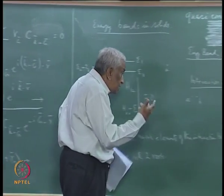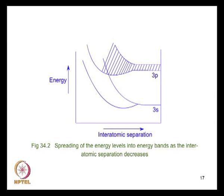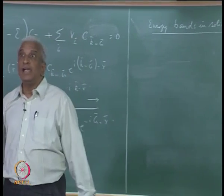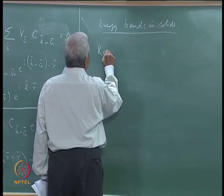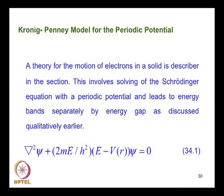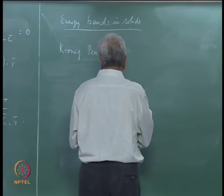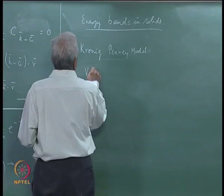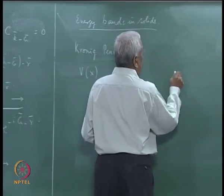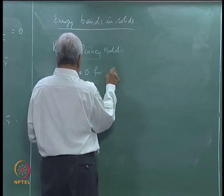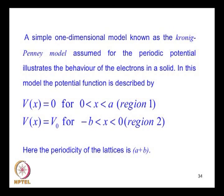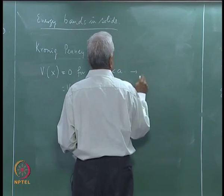In order to discuss the detailed nature of these energy bands, it is necessary to go further beyond this qualitative description. Let us consider a specific model in which we can calculate the energy band structure. This model is a simplified one-dimensional model known as the Kronig-Penney model. It discusses the motion of an electron in a one-dimensional potential which is 0 for 0 < x < a and equals V0 for −b < x < 0.